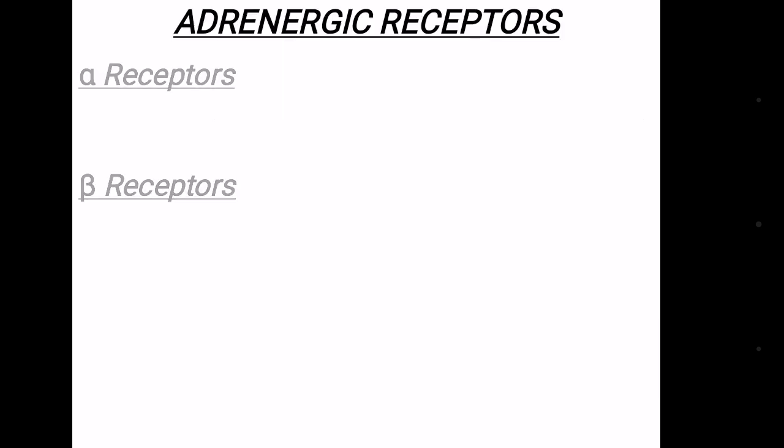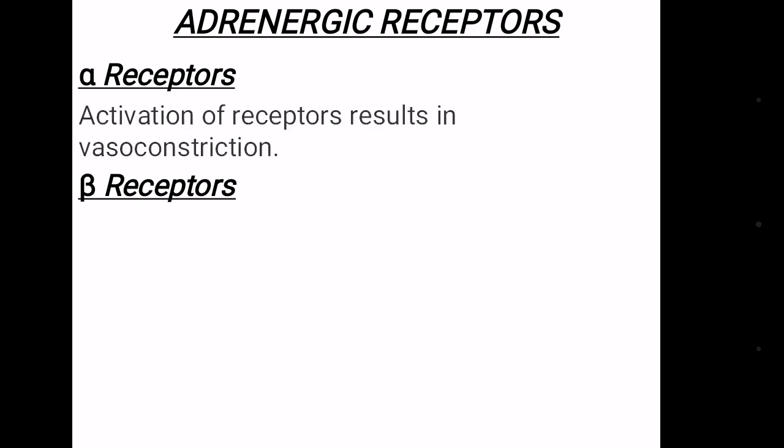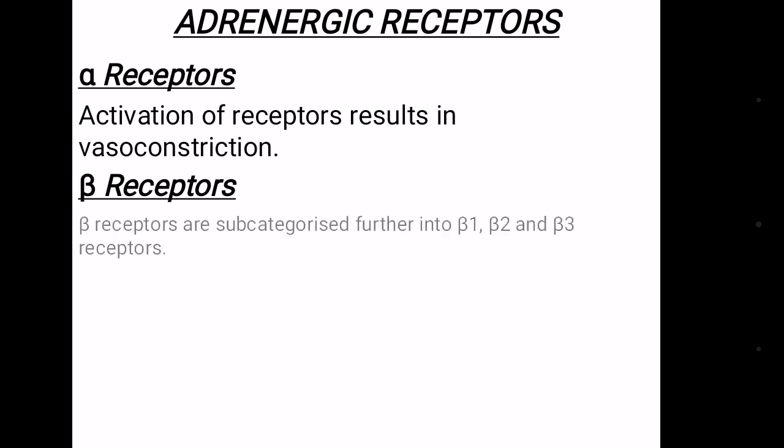Adrenergic receptors are of two types: alpha receptors and beta receptors. When alpha receptors are activated, they result in vasoconstriction. Beta receptors are further subcategorized into beta 1, beta 2, and beta 3 receptors.